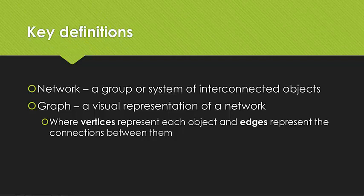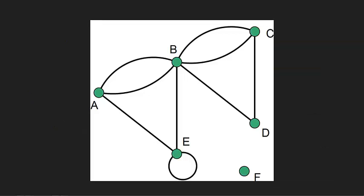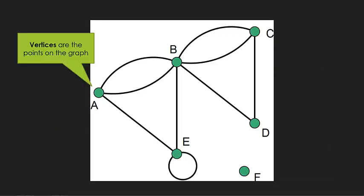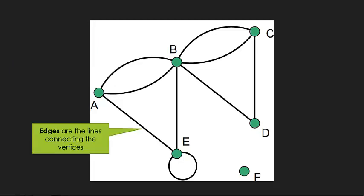A network is basically just a group of objects that are connected. Often we talk about towns, places or people and looking at the connections between them. A graph is basically just a visual representation of a network. Each of our vertices represent an object in that network and each of the edges show the connections between them. The vertices are points, a vertex is singular, vertices are plural and the edges show the connections between them.